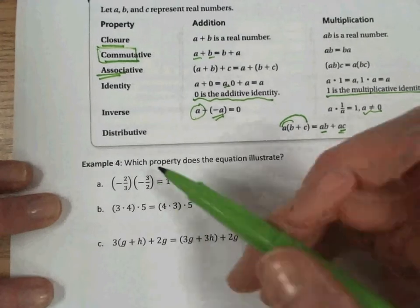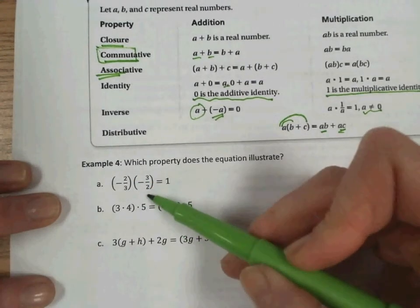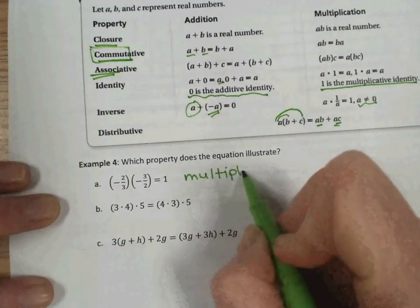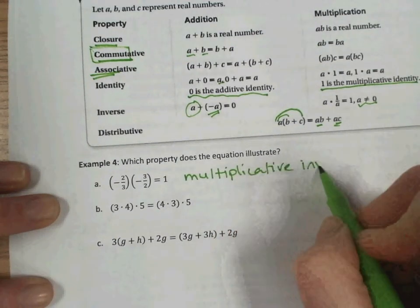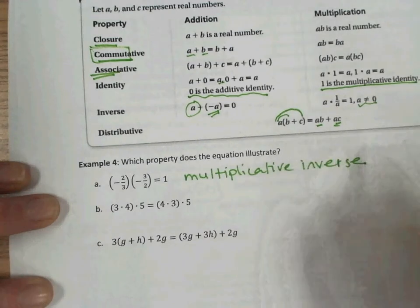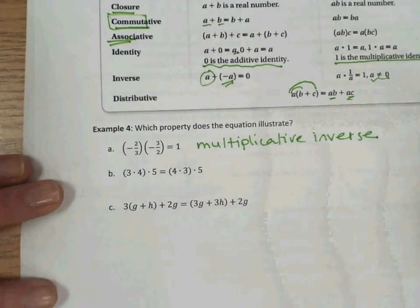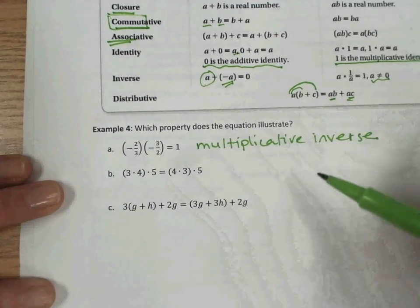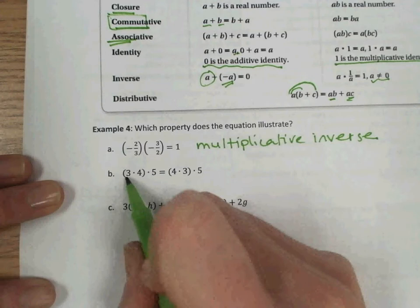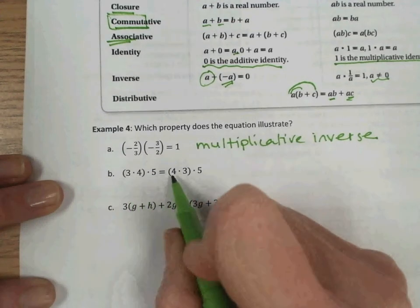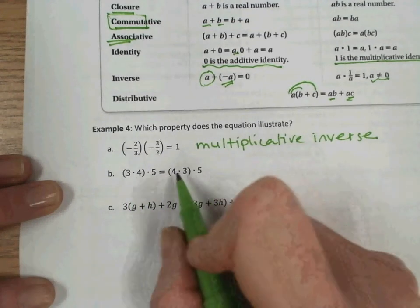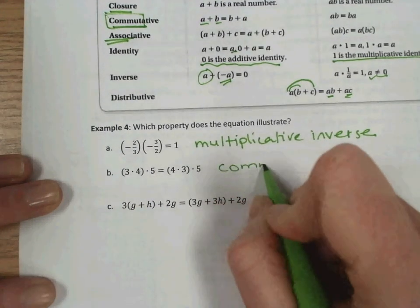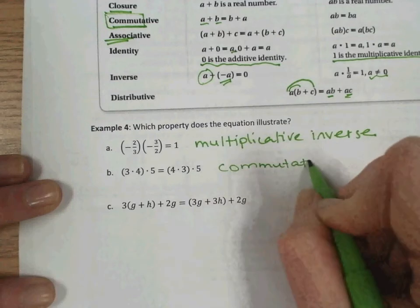Which property does this equation illustrate? So we have some examples here. So we have negative 2 thirds times negative 3 halves is 1. So that's your multiplicative inverse. This one's tricky a little bit because you see the parentheses, so you may want to think about associative property, or you may want to think about distributive property. But actually notice that the order is different on both sides. And therefore, this is actually representing the commutative property of multiplication.